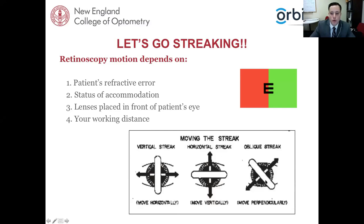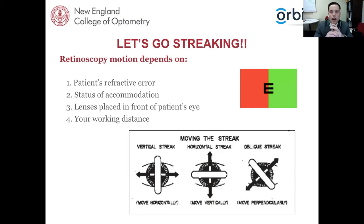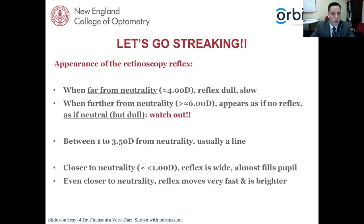Here we have the moving of the streak vertically, horizontally, and obliquely. You need to be comfortable rotating your streak. Spot versus streak retinoscopes come in here — I've only ever used a streak retinoscope. The streak is considered a little bit easier in terms of determining refractive error, specifically as it relates to astigmatism and getting the axis down correctly. Most people use streak retinoscopy today. When you're far from neutrality — about four diopters — the reflex is dull and slow. When even further, greater than six diopters, it almost appears as if there's no reflex.